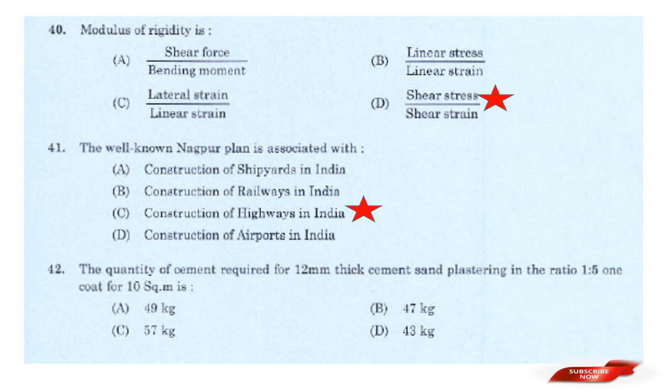Question: The quantity of cement required for 12 mm thick cement-sand plastering in ratio 1:5, one coat of 10 m² is? Options: 49 kg, 47 kg, 57 kg, 43 kg. Answer: Option D — 43 kg.